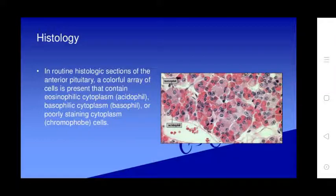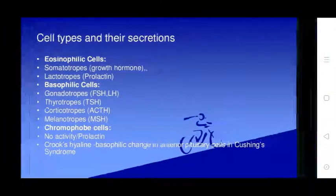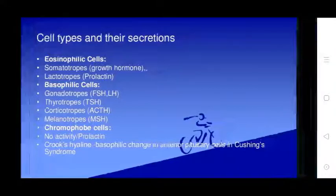Histologically, routine sections of the anterior pituitary show a colorful array of cells. Acidophils have eosinophilic cytoplasm; basophils have basophilic cytoplasm; chromophobes have poorly staining cytoplasm. Cell types and their secretions: acidophil cells include somatotrophs (growth hormone) and lactotrophs (prolactin). Basophil cells include gonadotrophs (FSH and LH), thyrotrophs (TSH), corticotrophs (ACTH), and melanotrophs (MSH). Chromophobe cells show no secretory activity.